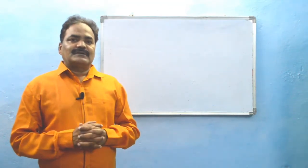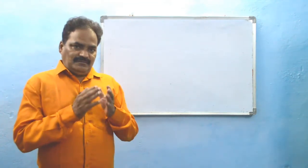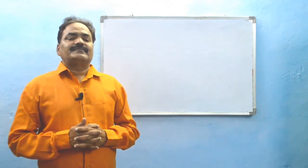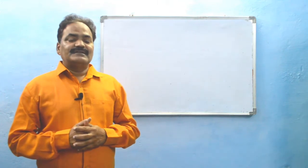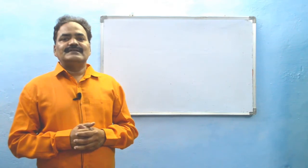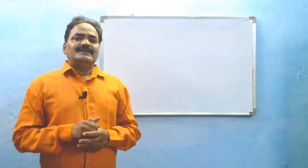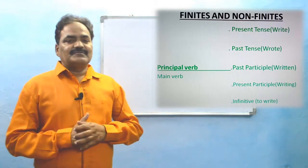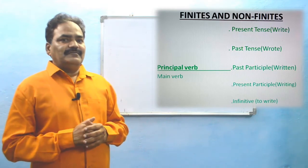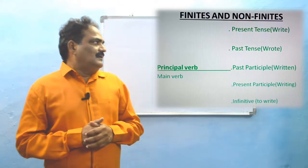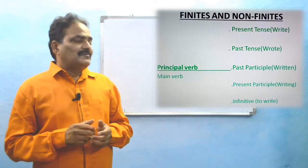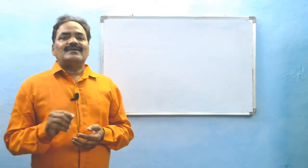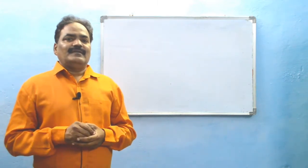Main verbs have got conjugation. Conjugation means present form, past form, past participle of the verb forms — principal verb forms. While discussing verbs and tenses, we added one more form to this conjugation, that is present participle form. It is nothing but the -ing form. And now we see one more form to this conjugation of verbs — that is infinitives. Every principal verb has got present form, past form, past participle, present participle, and also infinitives.